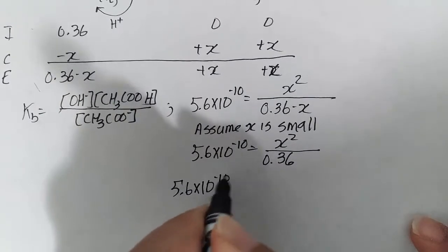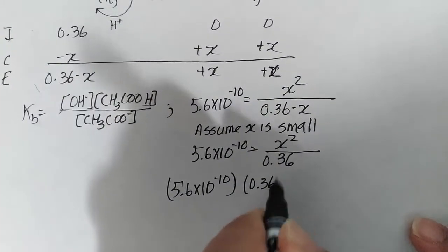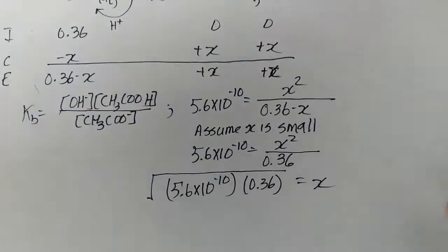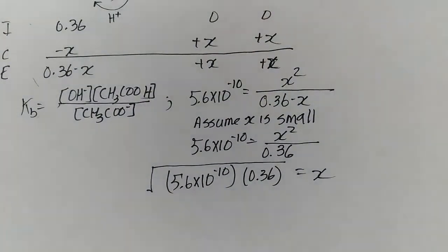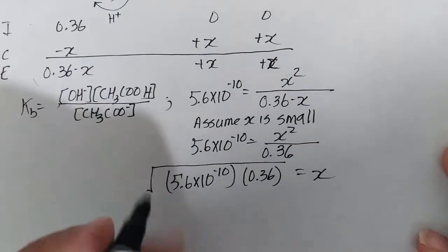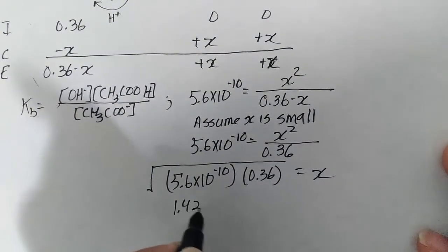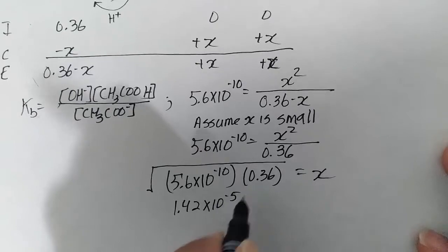So 5.6 times 10 to the minus 10 times 0.36—let's square root that to get us the value of x. Using my calculator, I'm getting an answer of about 1.42 times 10 to the minus 5 molar.